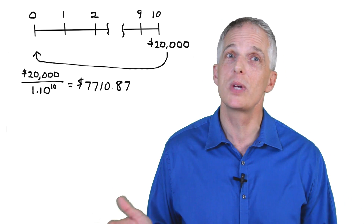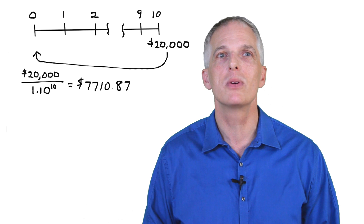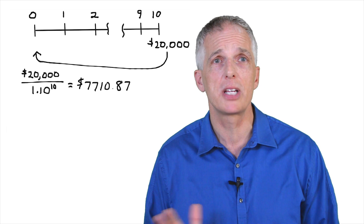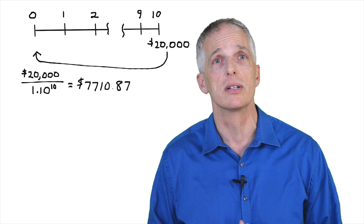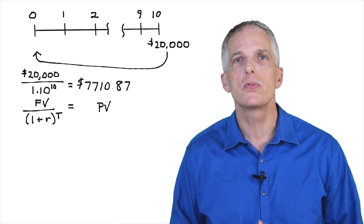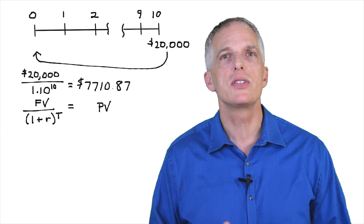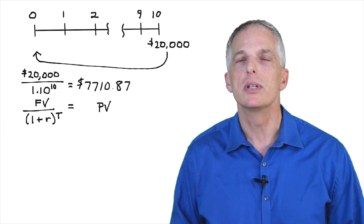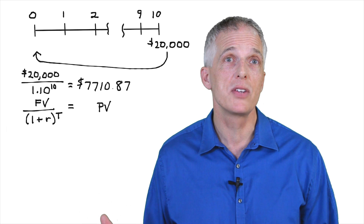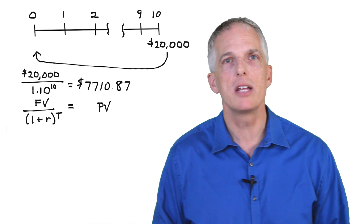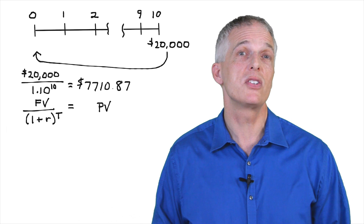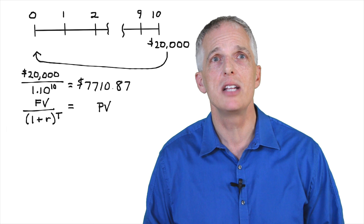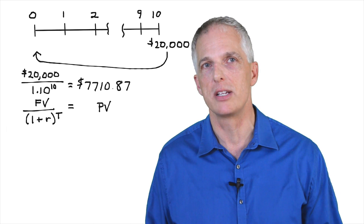The important insight here is that if you have about $7,711 in the bank today and indeed earn a 10% return in each of the next 10 years, you will have an account balance of $20,000 in 10 years. Of course, if you earn more than 10% each year you will reach your savings goal sooner, while if you earn less than 10% you will reach it later. This is just a simple application of the present value formula: PV equals FV divided by (1 plus R) raised to the power T, where FV is $20,000, R is 10%, and T is 10 years.